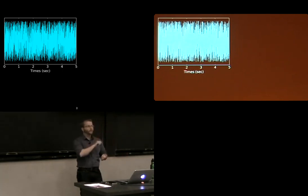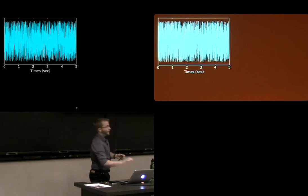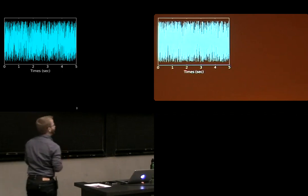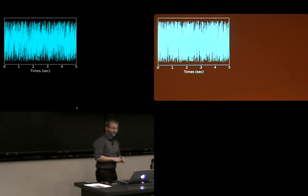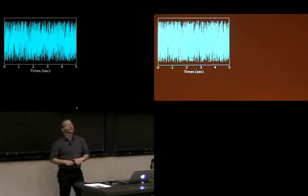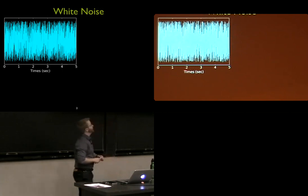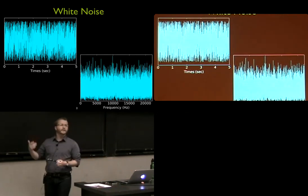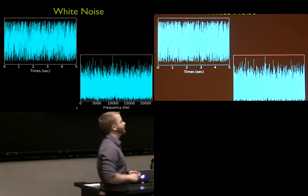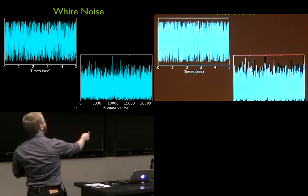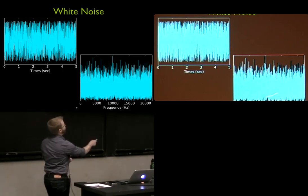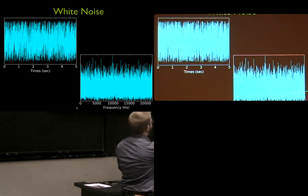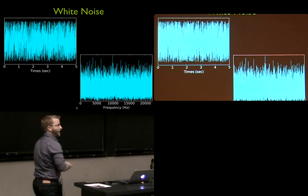White noise has equal contributions from every single frequency that makes up the data. That's the static white noise that those of you who've had analog TVs in the past have come to know. If we look at the frequency spectrum — and the handout I gave you today goes into detail about Fourier transforms — the average contribution to the noise from every frequency is about the same. That's what makes it white noise.